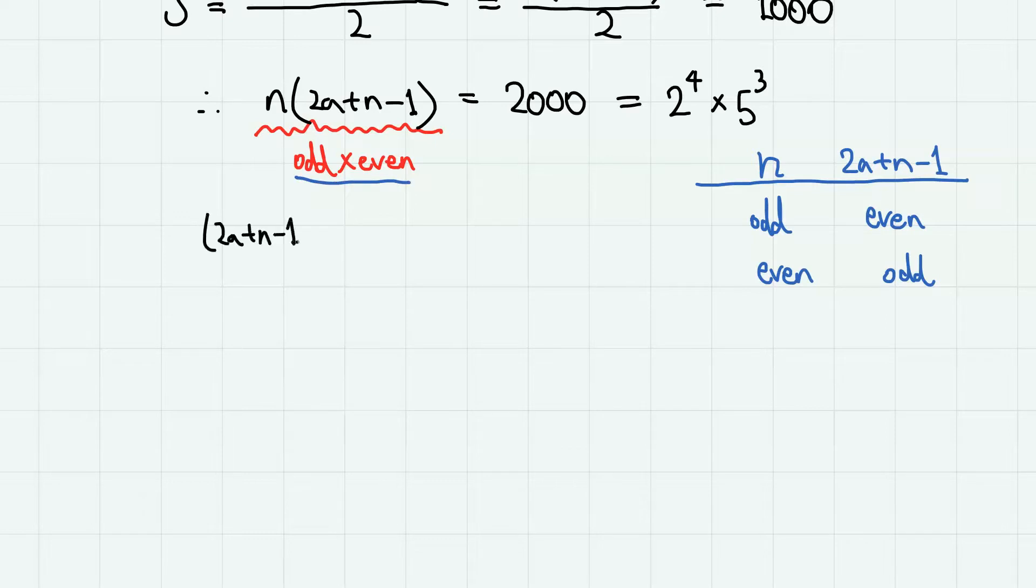Moreover, 2a plus n minus 1 minus n equals 2a plus 1, which is always positive when a is a natural number, which means n is less than 2a plus n minus 1. So n is the smaller number. Therefore, we have to find out possible ways of expressing 2000 as the product of one odd natural number and one even natural number. Using the fact that there exists only one kind of odd prime factor, namely 5, we can find them relatively easily.